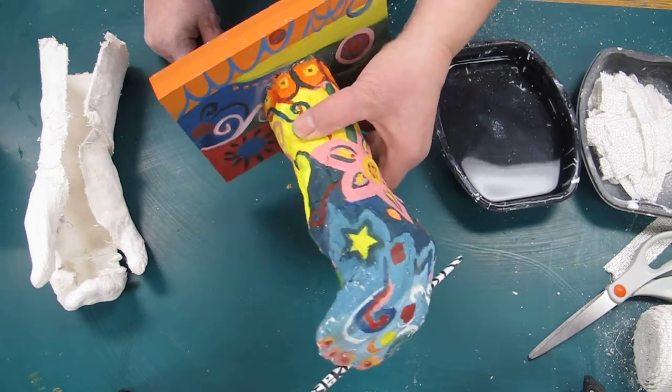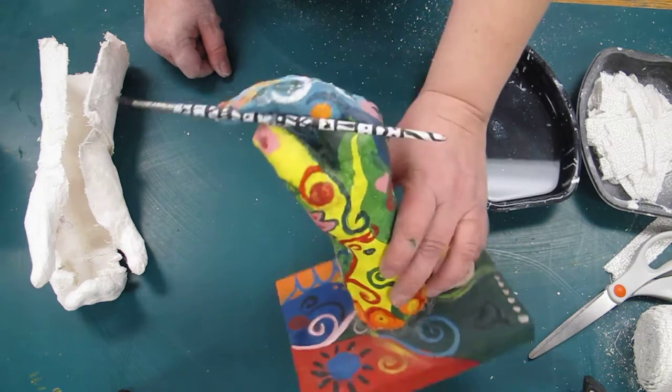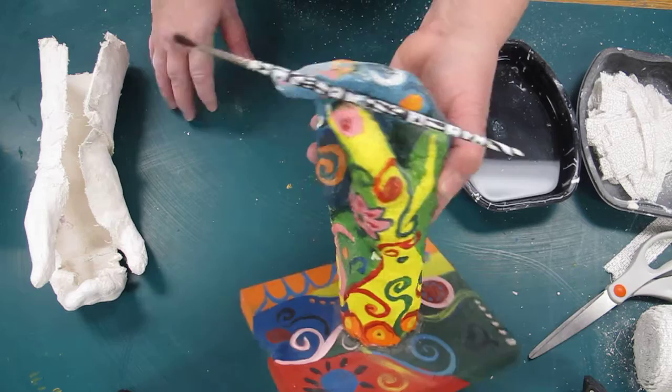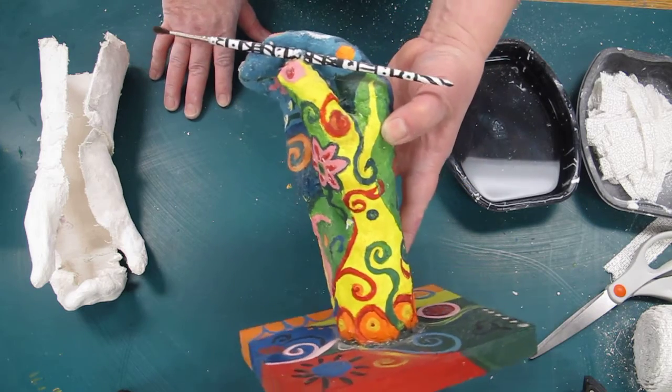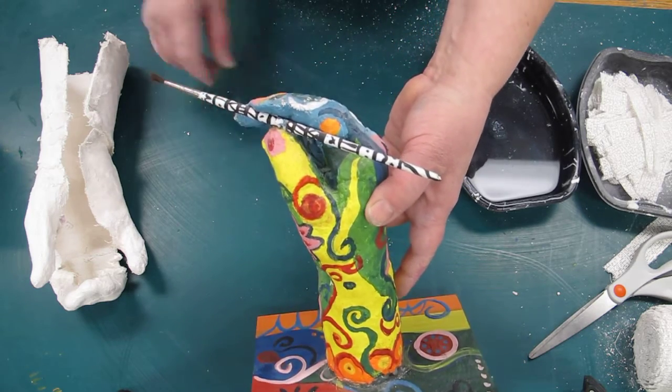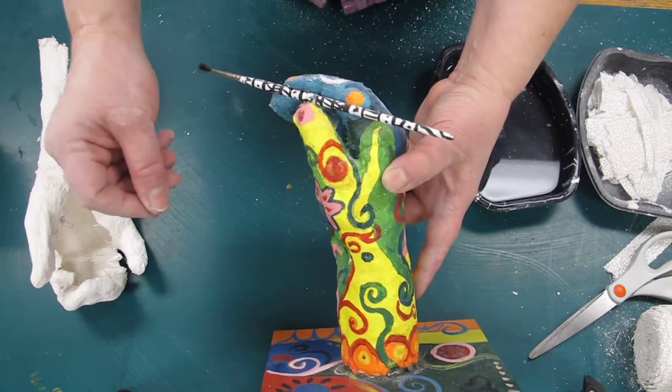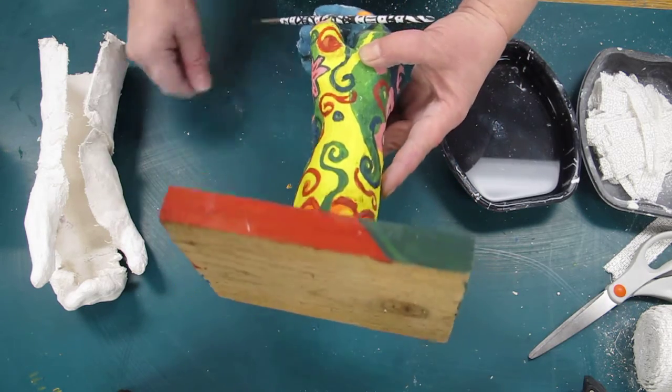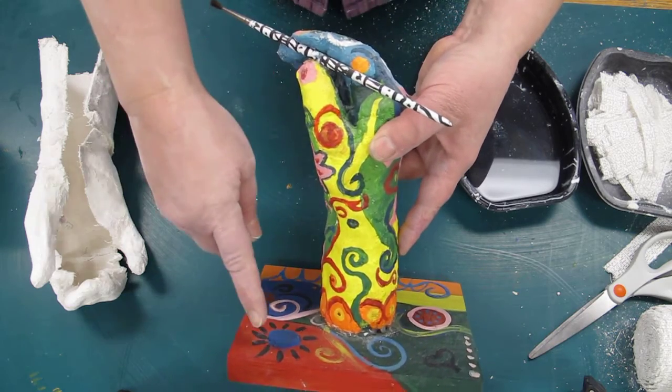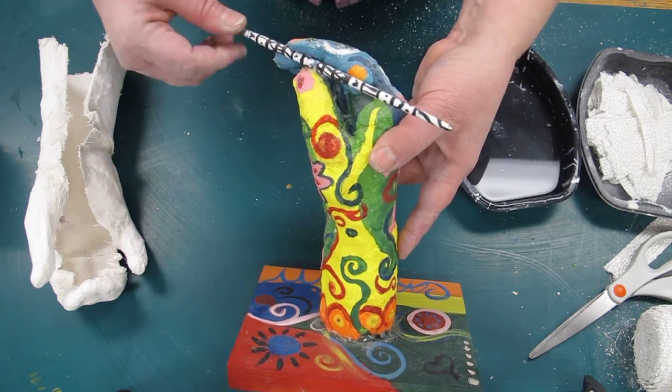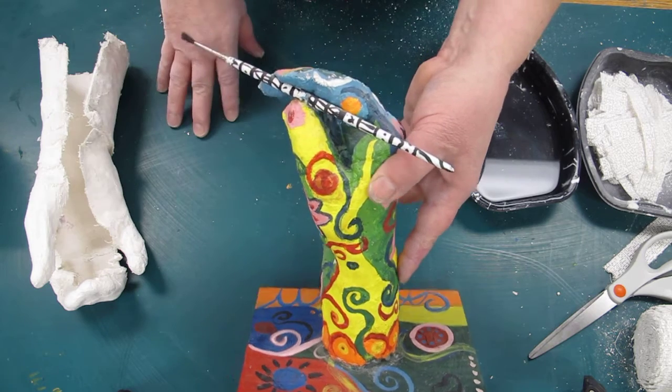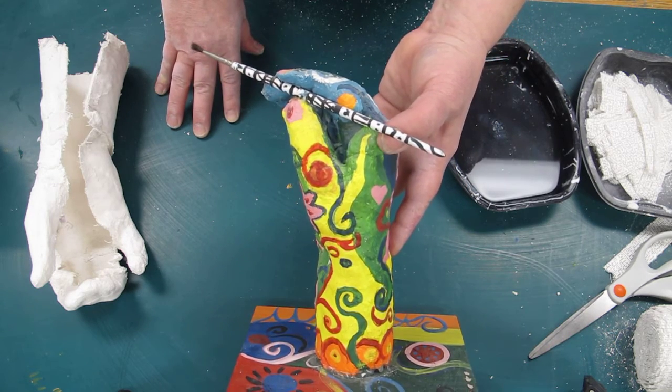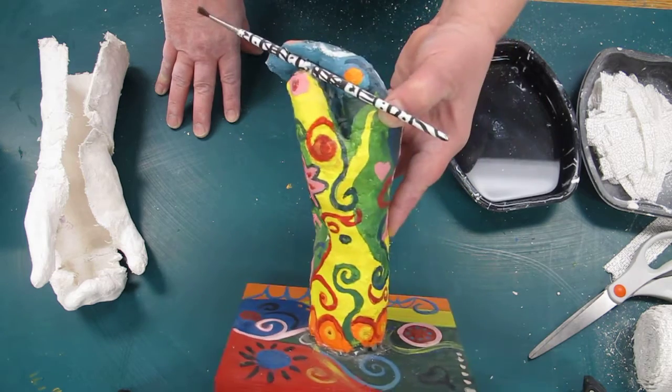So you're going to be thinking about how you'd like your hand. How does your hand represent you? In my case, I really enjoy painting. I formed my hand into the shape of using my hand with a paintbrush, and then we'll be applying this plaster bandage sculpture to a base and painting it all up, adding maybe some props.